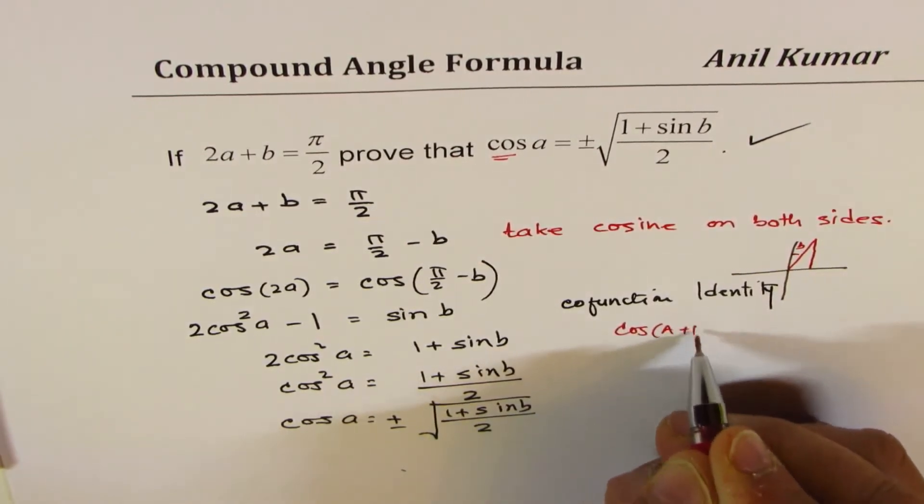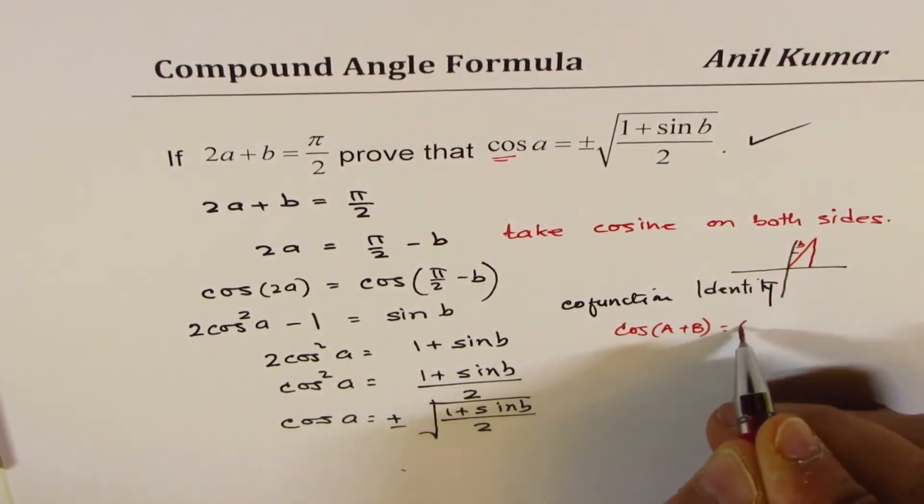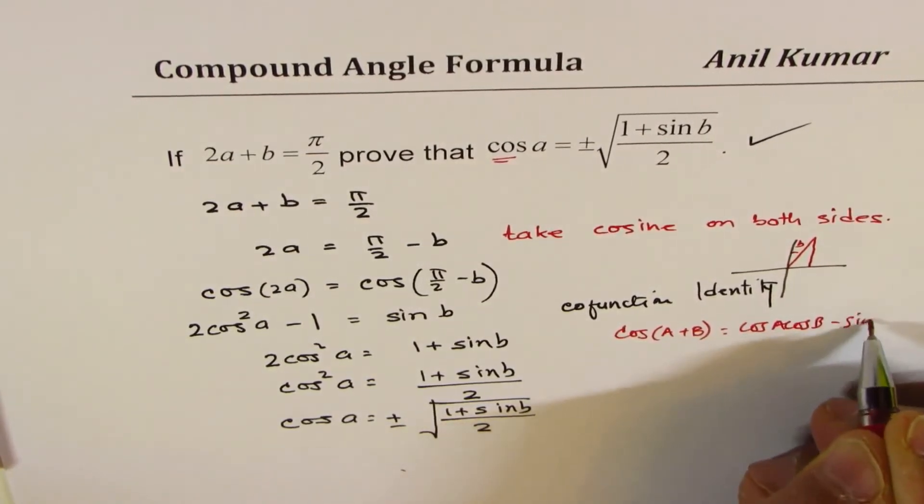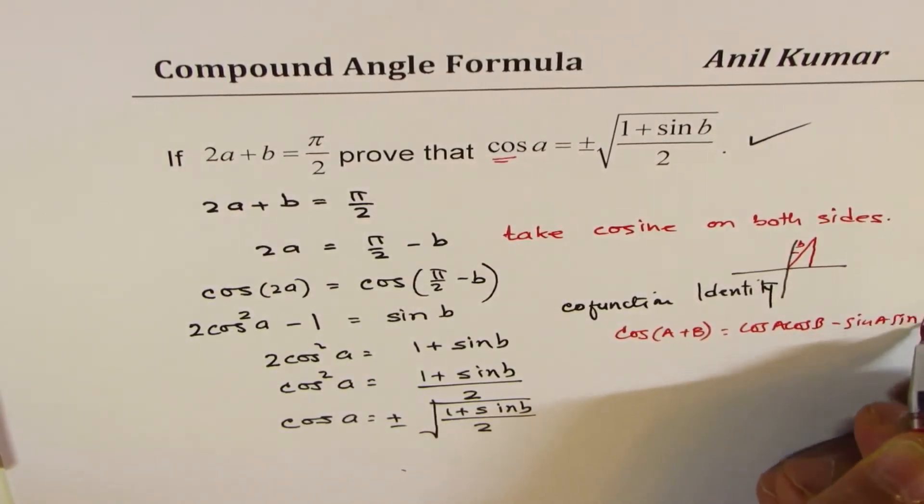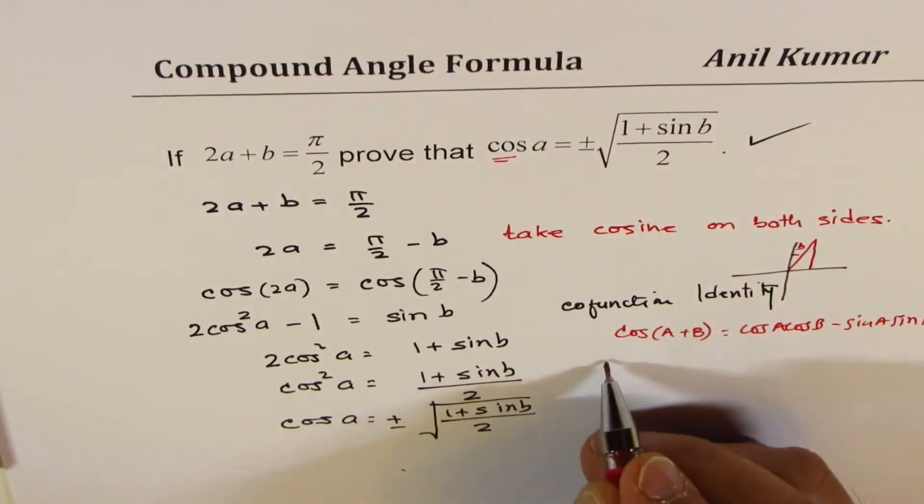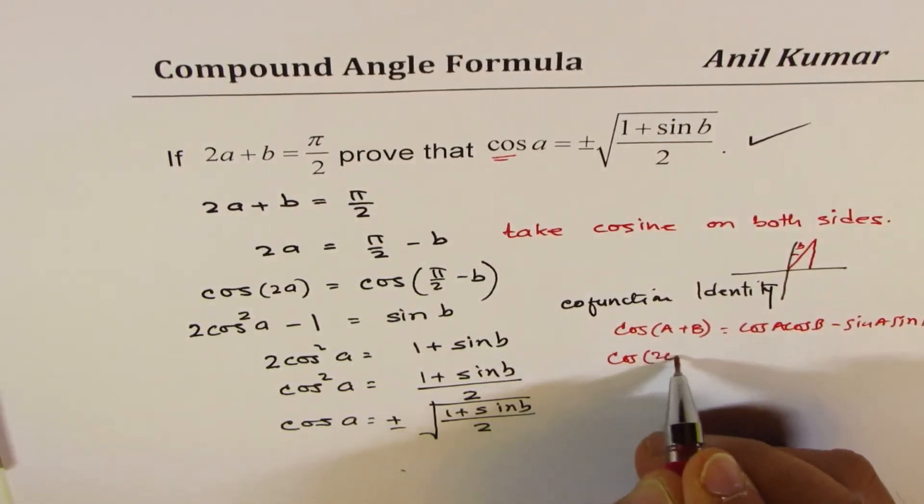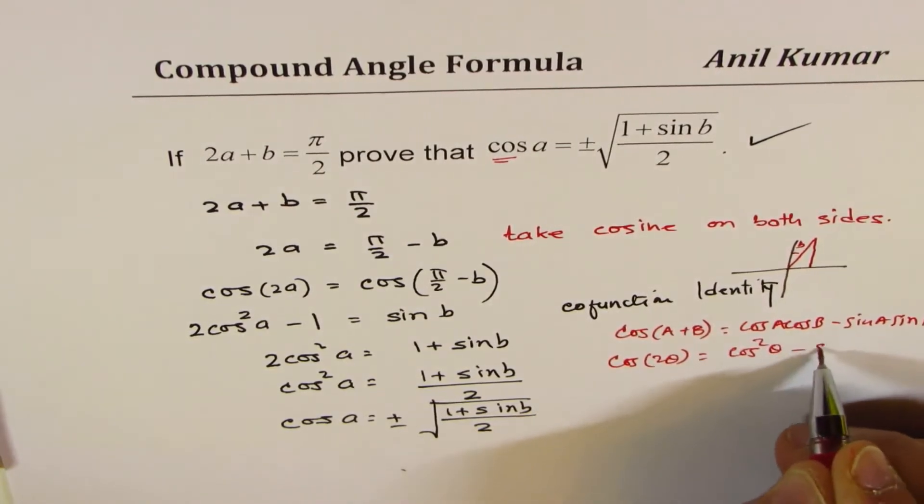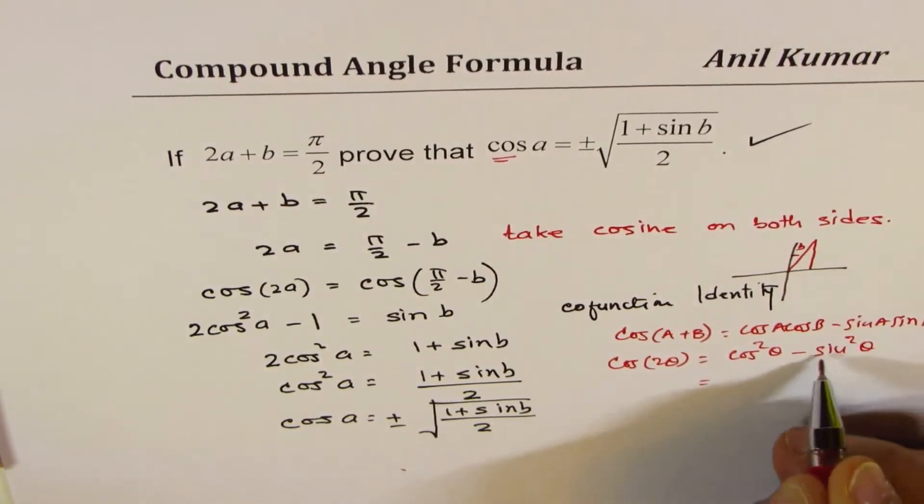From cos a plus b, which is cos a cos b minus sin a sin b. Now if I write both as theta, we get cos of 2 theta equals to cos square theta minus sin square theta.